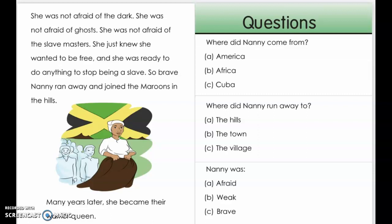Where did Nanny come from? A. America B. Africa C. Cuba. Where did Nanny run away to? A. The hills B. The town Or C. The village. Nanny was: A. Afraid B. Weak C. Brave.